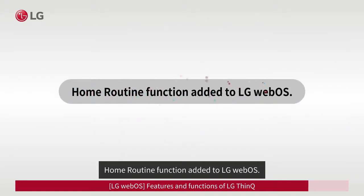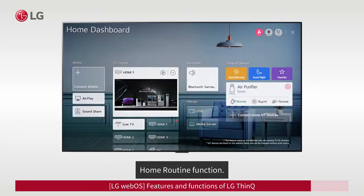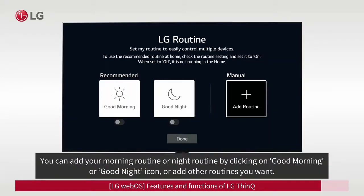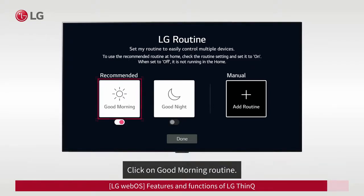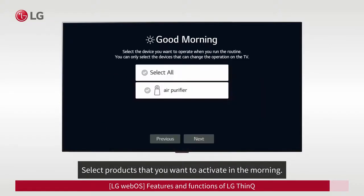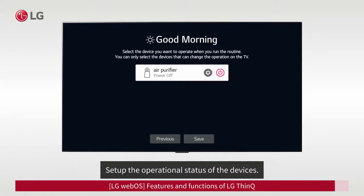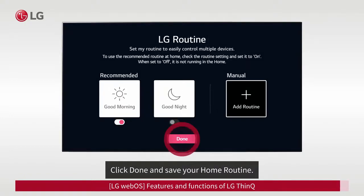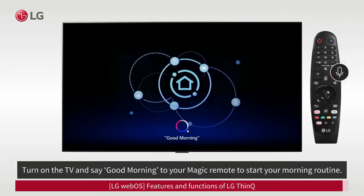Home Routine function added to LG WebOS. Click on the home routine function from the top right corner of the home dashboard. You can add your morning routine or night routine by clicking on the 'Good morning' or 'Good night' icon, or add other routines you want. Click on the 'Good morning' routine and select products that you want to activate in the morning. Set up the operational status of the devices. Click Done and save your home routine. Turn on the TV and say 'Good morning' to your Magic Remote to start your morning routine.